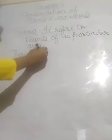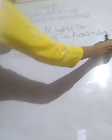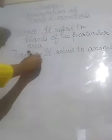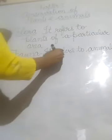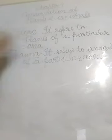Flora refers to plants of a particular area, and fauna refers to animals of a particular area. To protect our flora and fauna and their habitat, the government has made protected areas.